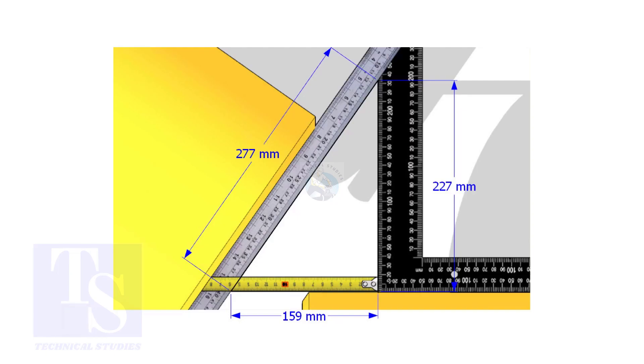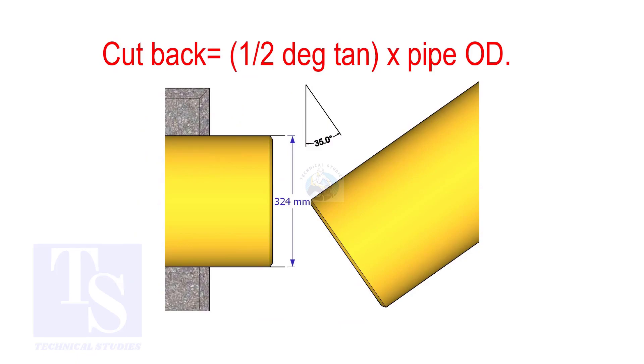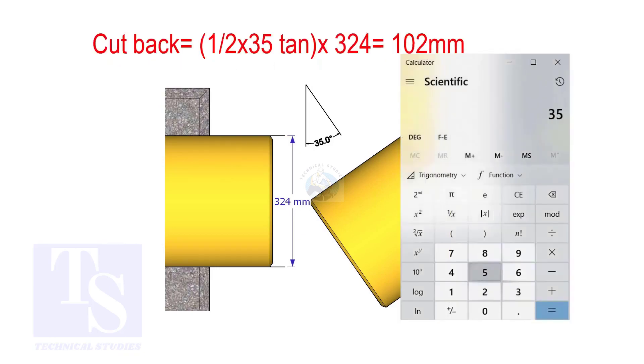How to calculate the cutback of a single cut miter. When it is a single cut, the cutback is half degree tan multiplied by the OD of the pipe. The answer is 102 millimeters.